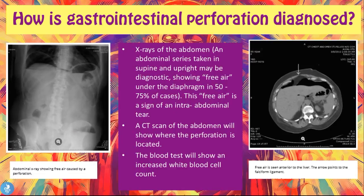Gastrointestinal perforation is diagnosed using X-rays of the abdomen. An abdominal series taken in supine and upright positions may be diagnostic, showing free air under the diaphragm in 50 to 75% of cases. This free air is a sign of an intra-abdominal tear. In the picture on the left, you can see the abdominal X-ray and the amount of free air within the abdominal cavity, which is a sign that a perforation has occurred because whenever there's a tear, we'll have air or gas entering that chamber.